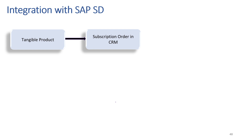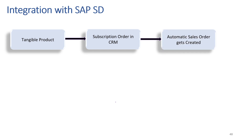Also, the company might charge some additional fee for delivering the SIM to our address. These scenarios can be handled using integration with BRIM. Here we configure the system such that if the product is of tangible type, then firstly we would create a subscription order in CRM or SOM. Then, instead of a subscription contract getting created as in previous cases, here automatically a sales order will get created instead.